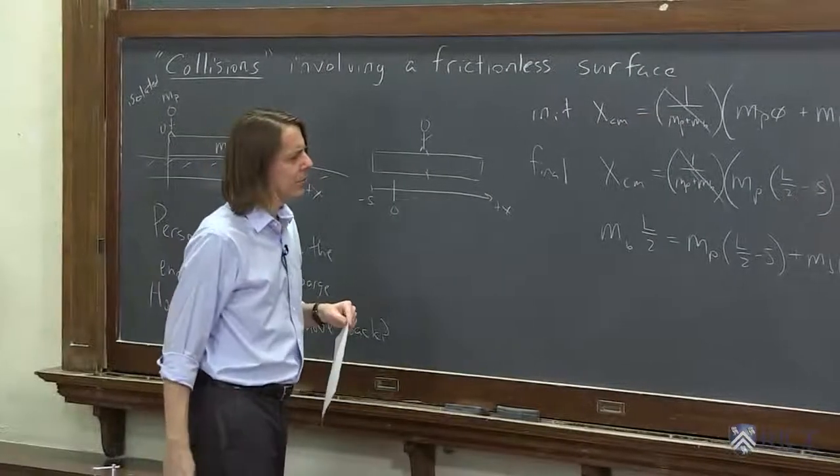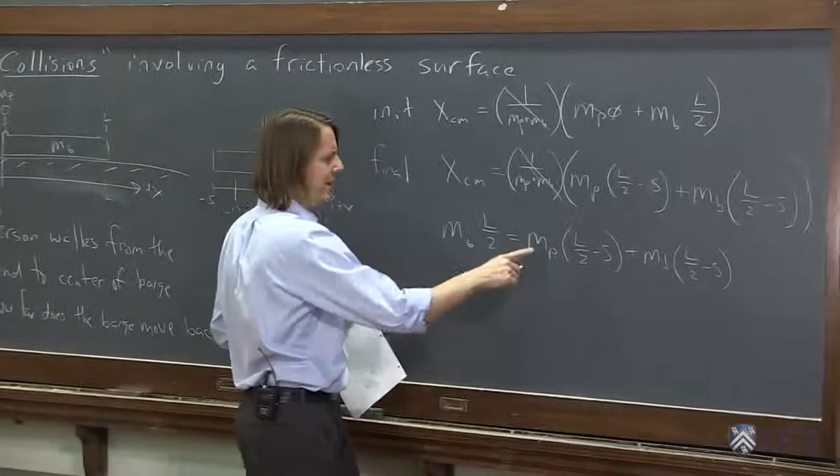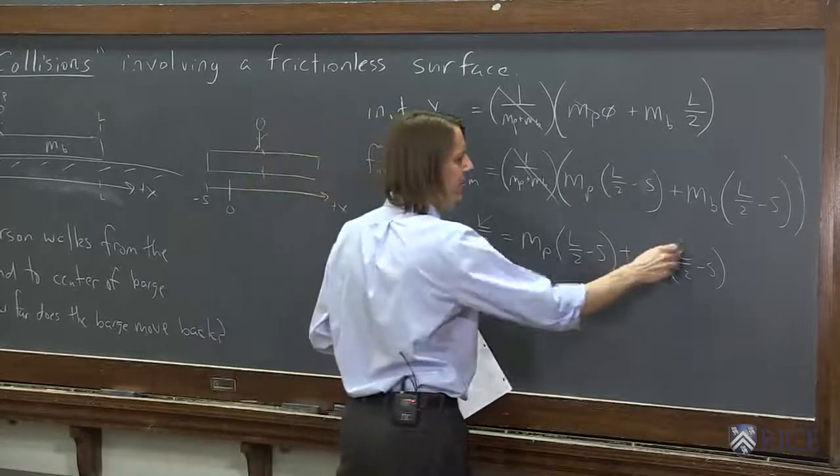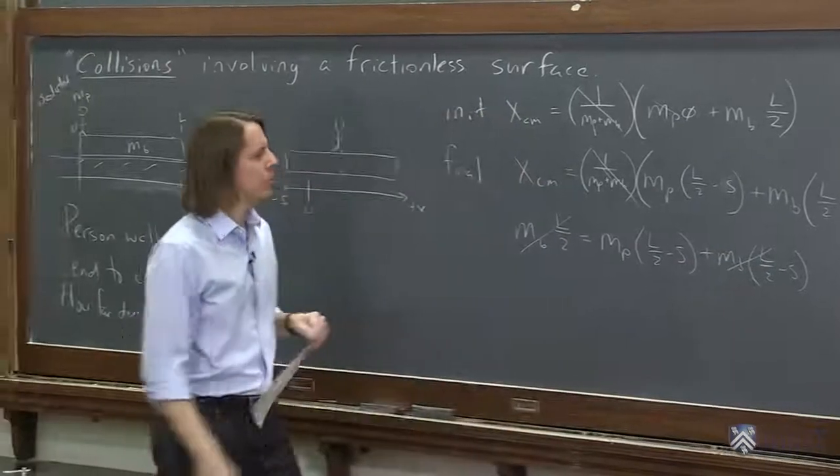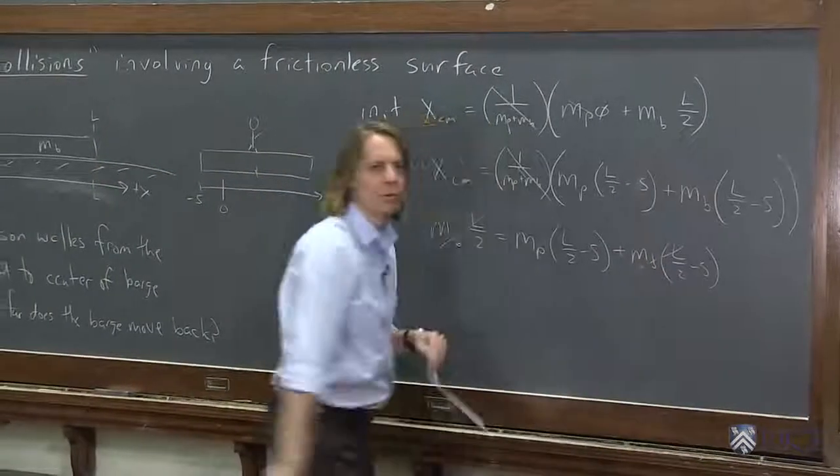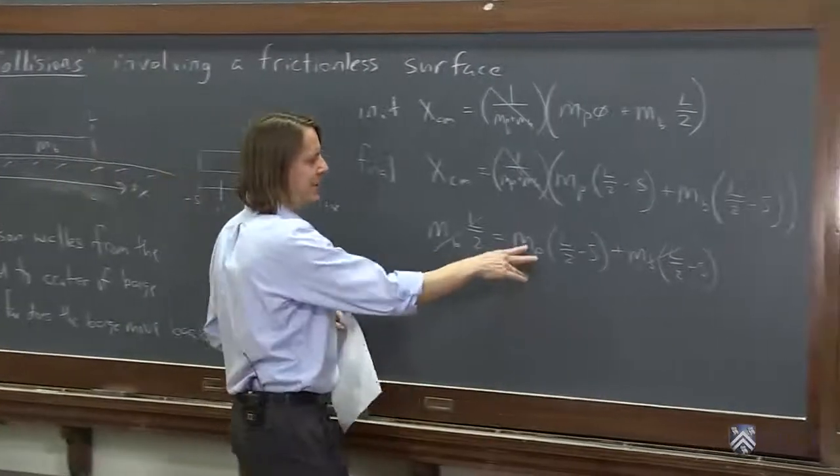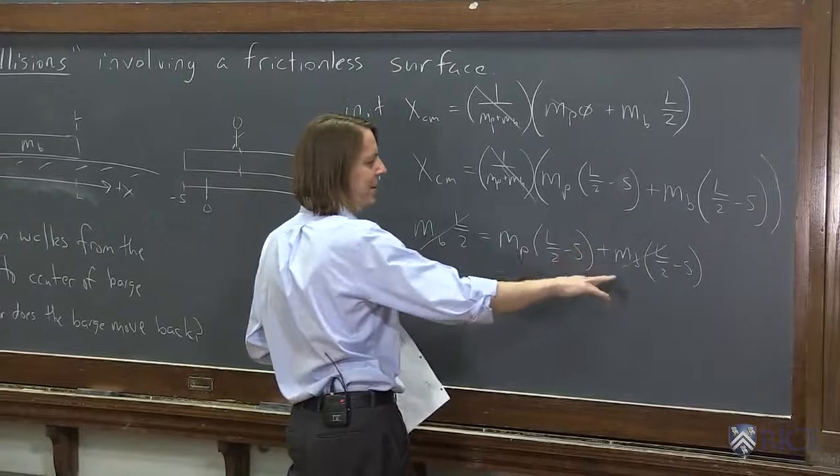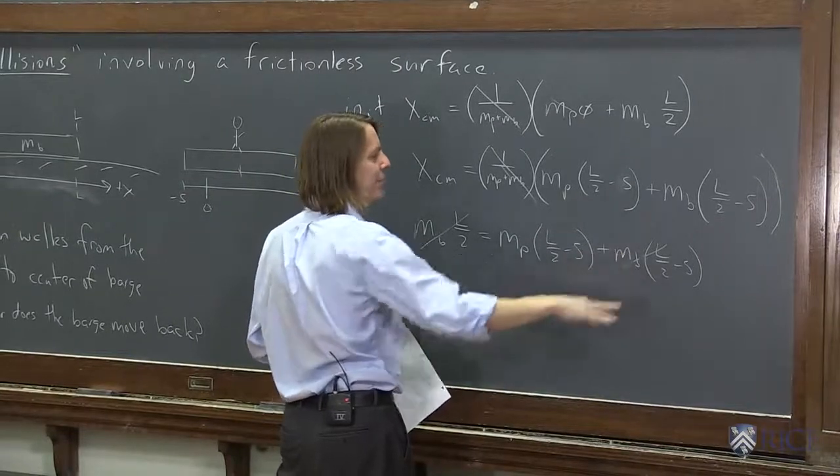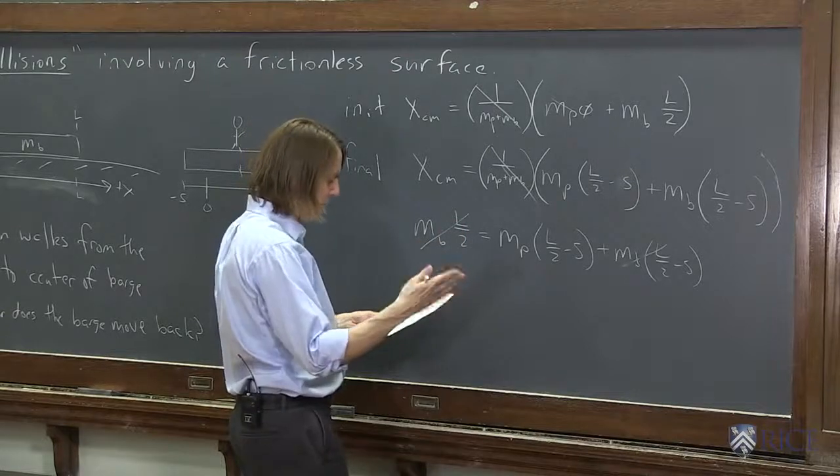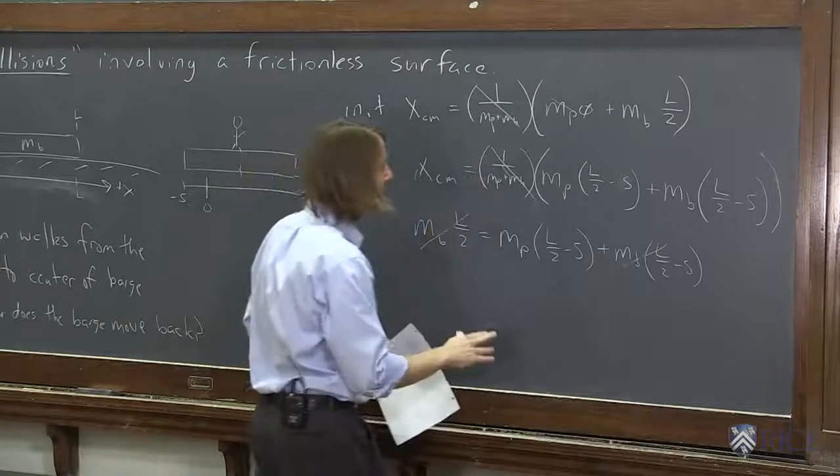So we have mb times l over 2 equals mp times l over 2 minus s plus mb times l over 2 minus s. And then, we could see that probably the quickest thing to see is that mb l over 2 is over here and mb l over 2 is right there. So that one cancels, right, if we're doing our algebra tricks.